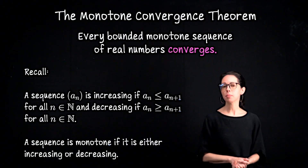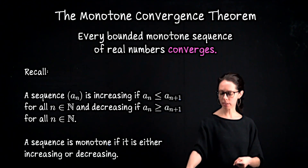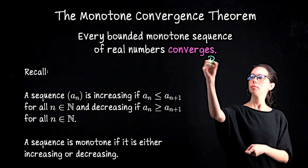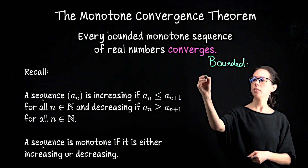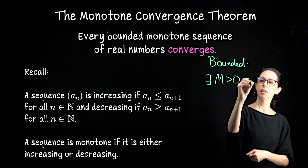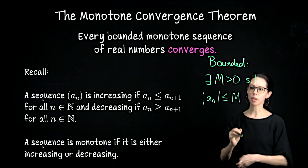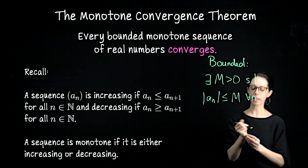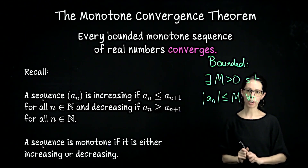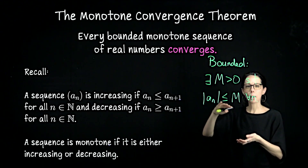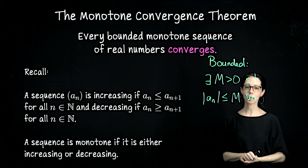The monotone convergence theorem tells us that if a sequence is monotone and bounded — bounded means there exists a number M greater than zero so that the absolute value of the terms are all less than or equal to M for every index — then it has to converge. A helpful picture is a sequence going up with a roof on it, so it levels off and tends to a limit.